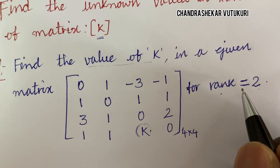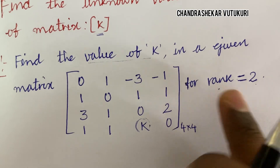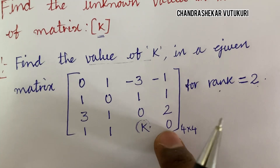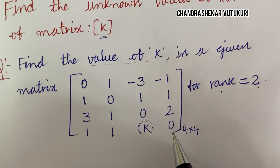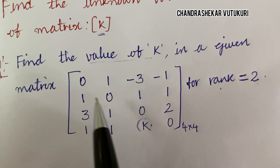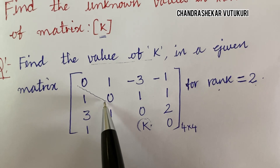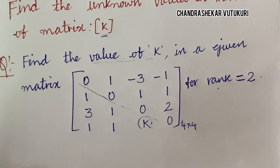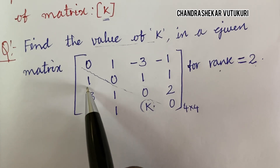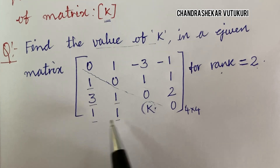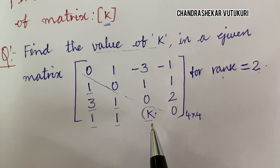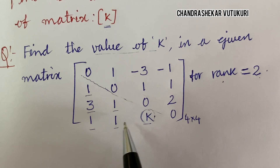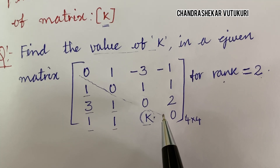What does rank equal to 2 mean? It is the number of non-zero rows in the given matrix. Since the rank is 2, we need to have exactly 2 non-zero rows. Looking at the diagonal elements of the matrix, they are 0. What we need to do is make all elements below the diagonal equal to 0, so that the number of non-zero rows equals 2.